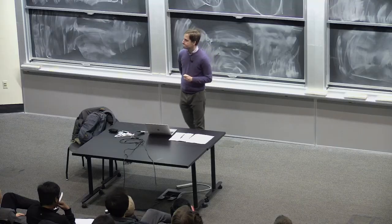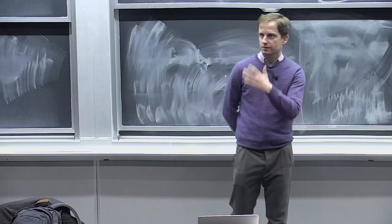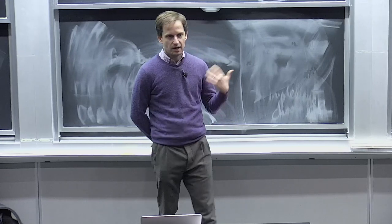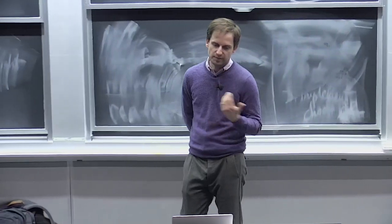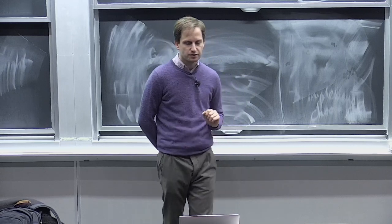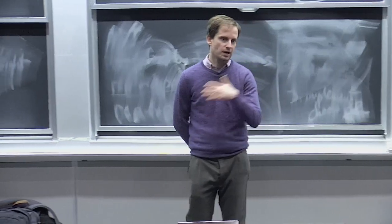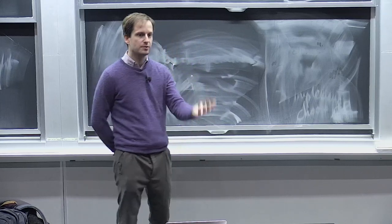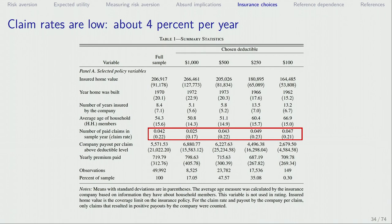One important feature: if claim rates are really high, then having very low deductibles makes sense. But it turns out claim rates are actually very low. Overall, people's claim rates are 4.2% per year — out of 100 customers, only 4.2 per year actually claim any damage. It varies a little by choice of deductibles, but for each group, the claim rate is below 5%. So it's very low.